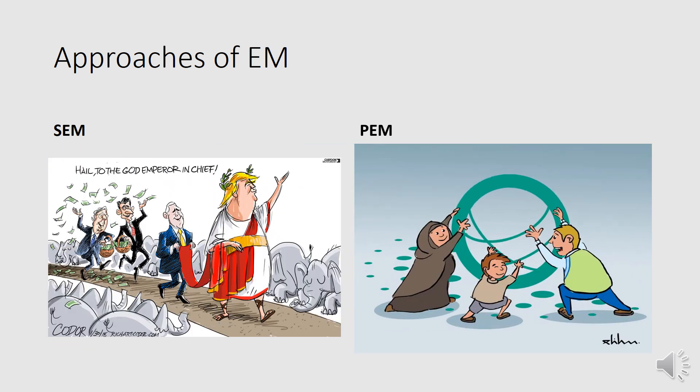Participatory environmental management is more successful if certain conditions are met. First, it must offer clear benefits to both the government and the community. Second, the required legislation and by-laws must allow for it. Third, adequate support services must be provided.